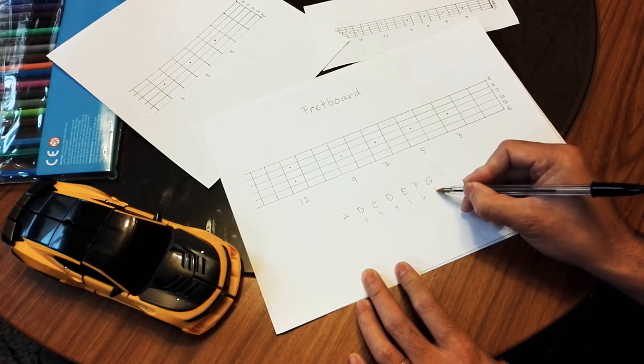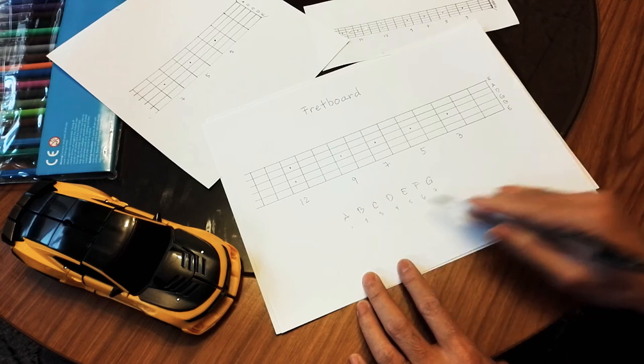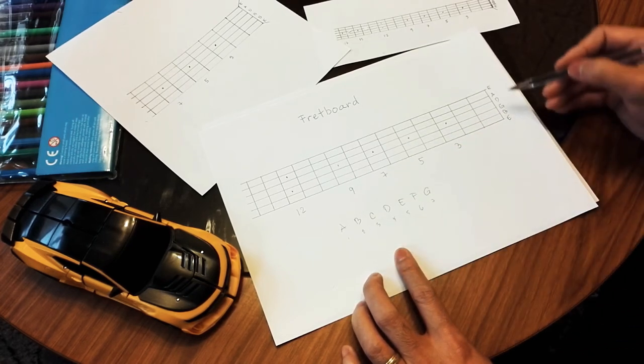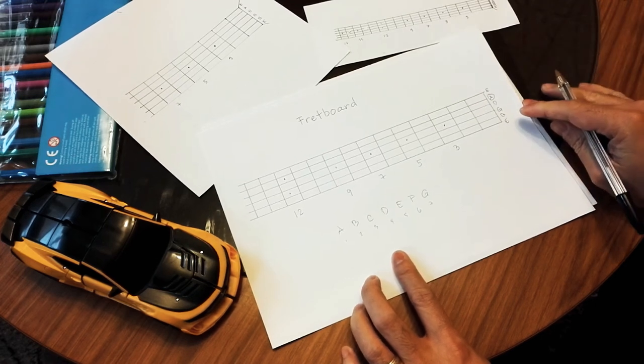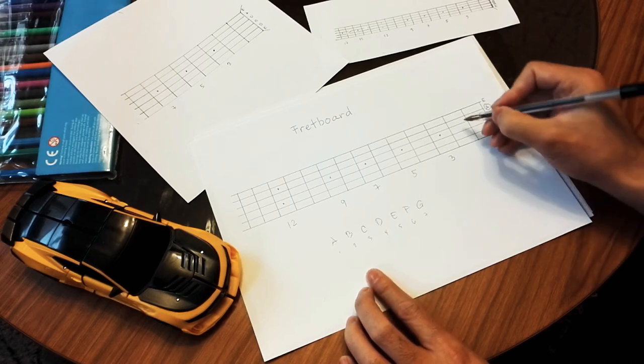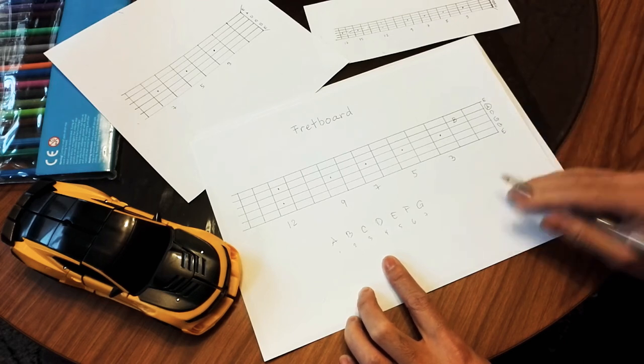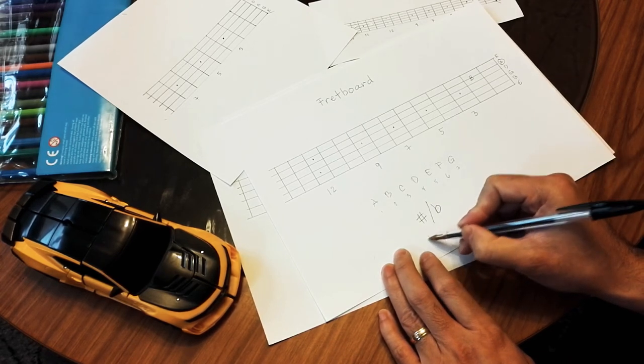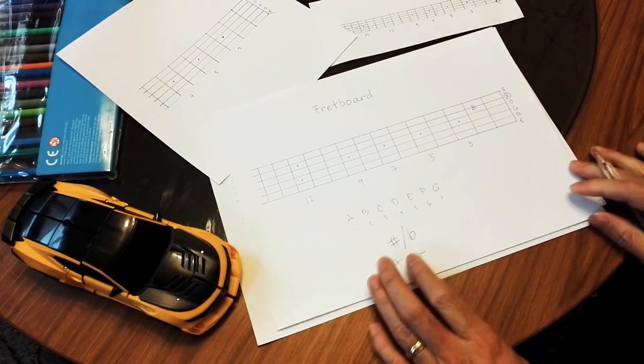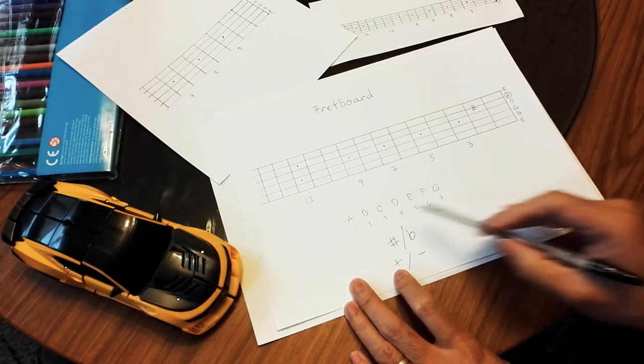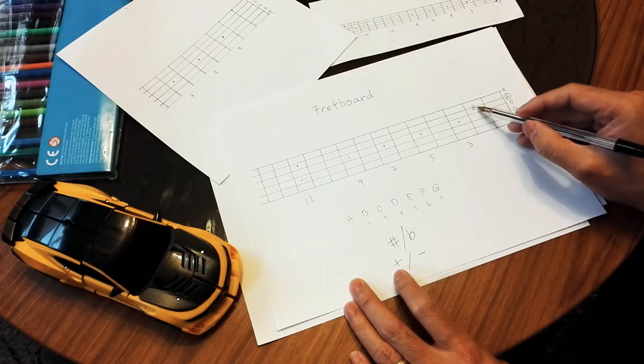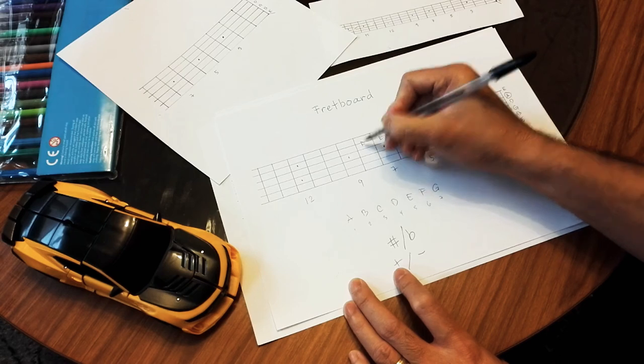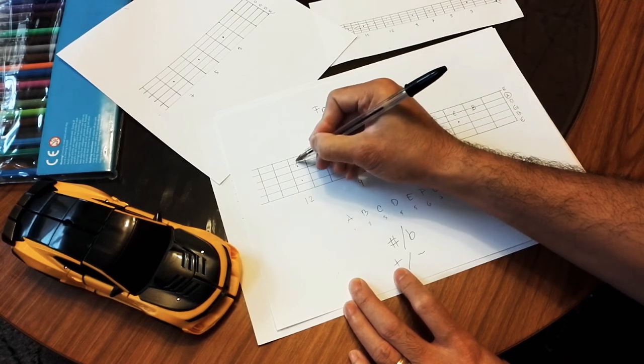Let's start putting these letters on the fretboard. A is already here, so A is there. Now we can allocate B - B is here because there's what you call sharps and flats, or you can simply address it as plus or minus. We'll talk more about that one later. So we'll just concentrate on the A-B-C-D-E-F-G, A-B-C-D-E-F-G and back to A.